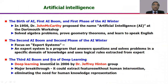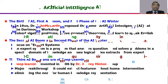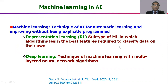The third phase, the current phase, is based on deep learning, a system invented by Dr. Geoffrey Hinton. Deep learning is basically part of machine learning — we train the machine for different things and then the machine is able to perform certain tasks. Machine learning is of two types: representation learning and deep learning. Deep learning is a technique of machine learning with a multi-layered neural network algorithm.